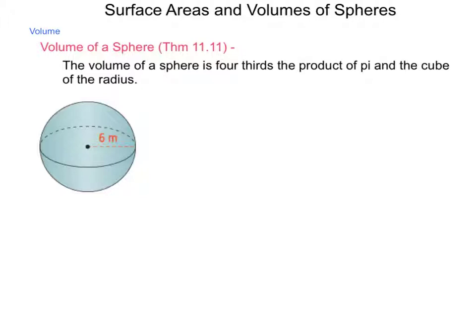The volume of a sphere is 4 thirds the product of pi and the cube of the radius. From a visual point of view of this formula, V equals 4 thirds pi r cubed. What would be the volume of this sphere that is shown here? We can see we have a radius value of 6 meters.